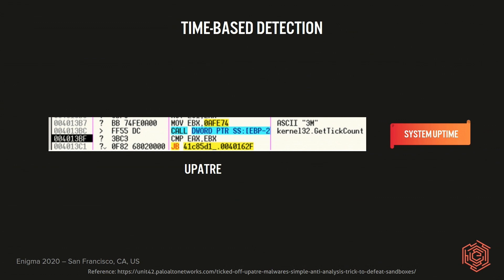As an example, we decided to use the Upater family. We can see the instructions inside a debugger, where Upater is using the Windows API GetTickCount and is going to compare the obtained value against 0xAFE74, which is roughly 12 minutes. If the value is less than 12 minutes, Upater determines that the system is not trustable and is going to exit.